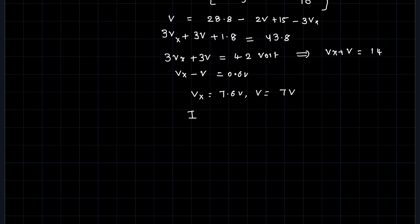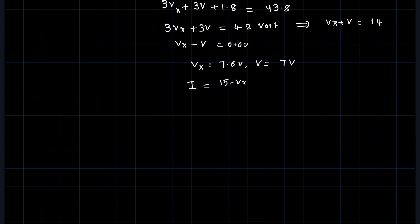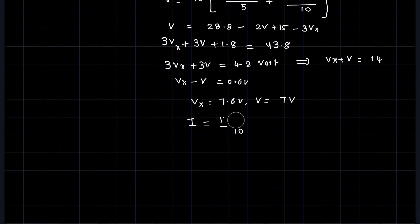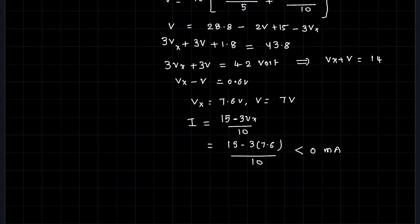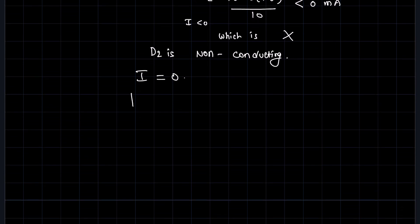Now solving for the current i using the equation 15 minus 3 times Vx over 10, and substituting Vx equals 7.6 volts, we get a value less than 0 milliampere. Since current i is less than zero, this is not physically possible. So it is clear that D2 is in non-conducting mode. Therefore i equals 0, and the circuit simplifies by removing D2.